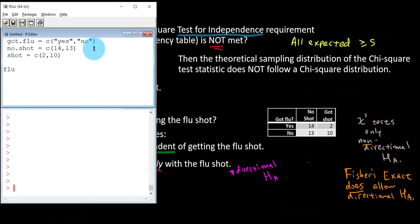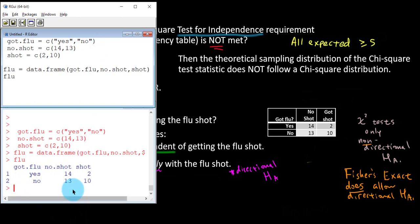No shot is a vector that contains the values 14 comma 13. I do not need to put those in quotations because that is a numeric vector. The shot vector, 2 comma 10. And now I need to create a data frame. I'll call it flu. It's been a while since we've made a data frame, but we did this at the beginning of the semester. I want to combine into a package our three vectors. Got flu, no shot, shot. Let's run these and make sure they're all operational. No errors. That's good.